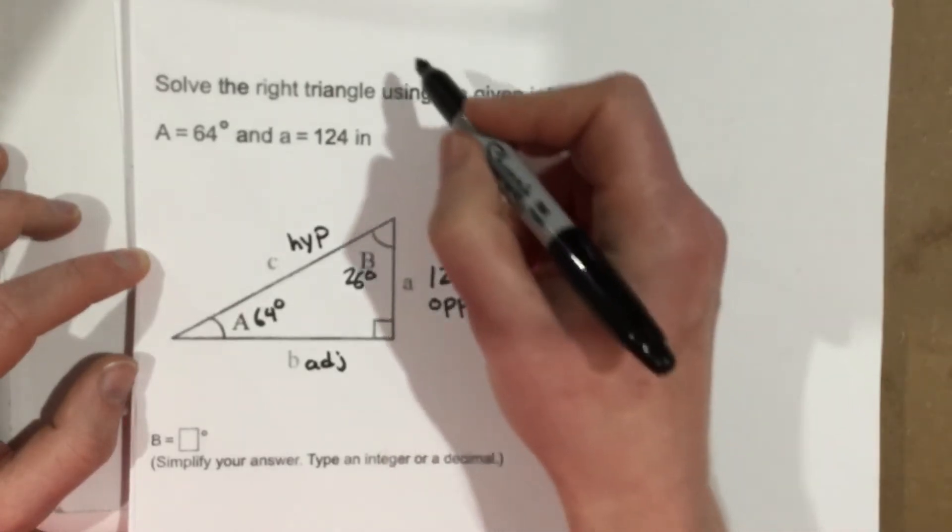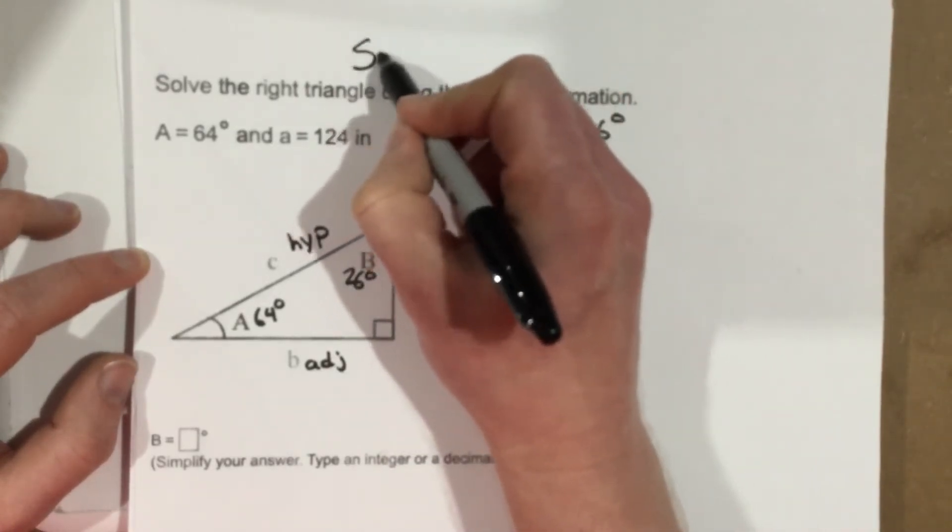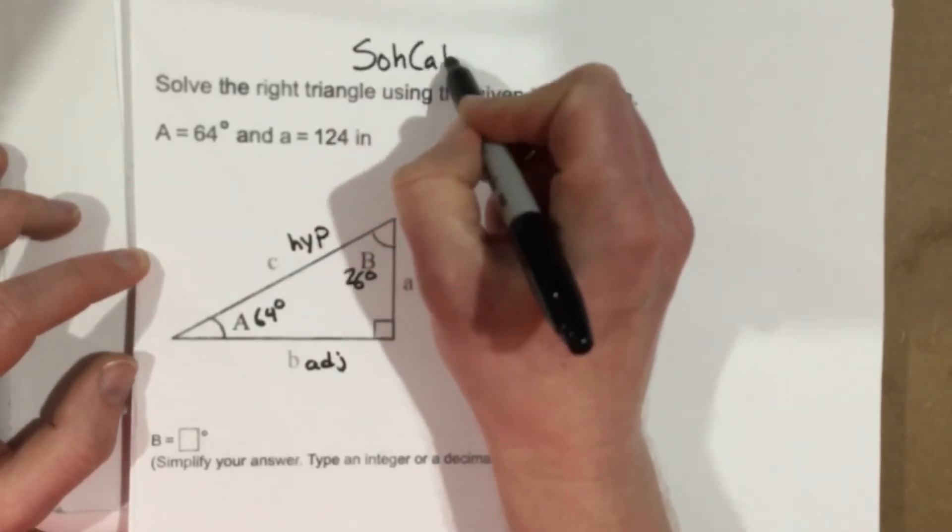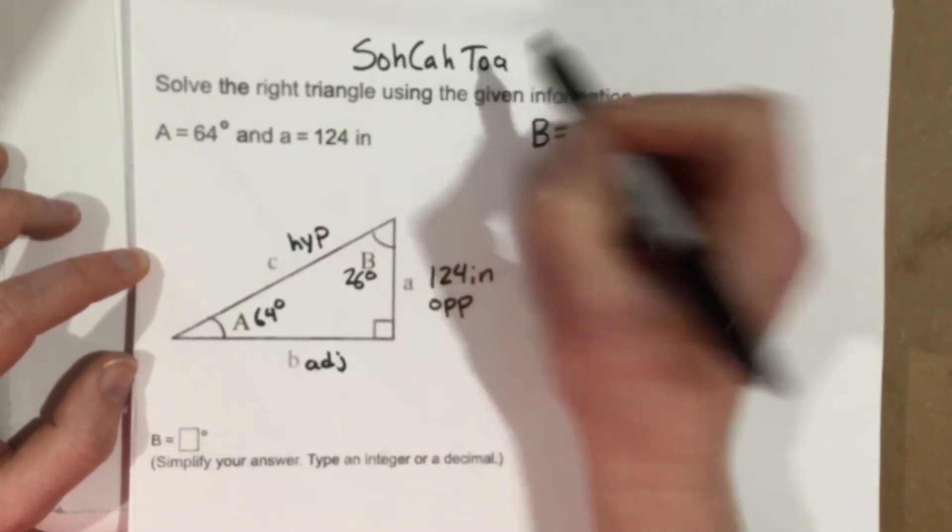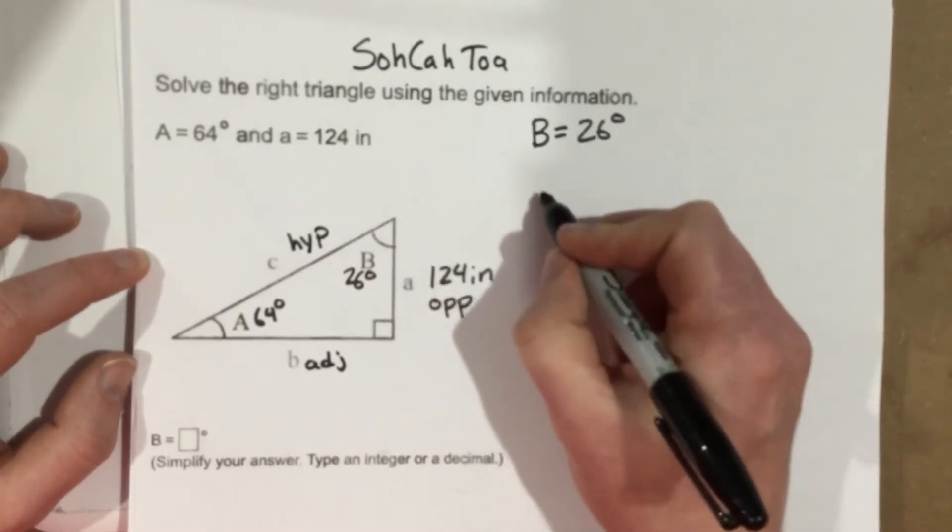So if I want to find the adjacent side, I have the opposite side here. I'm going to use, well, if you remember, SOHCAHTOA, so let's write that at the top. SOHCAHTOA. O and A is TOA, so that's tangent. So I'm going to use tangent.